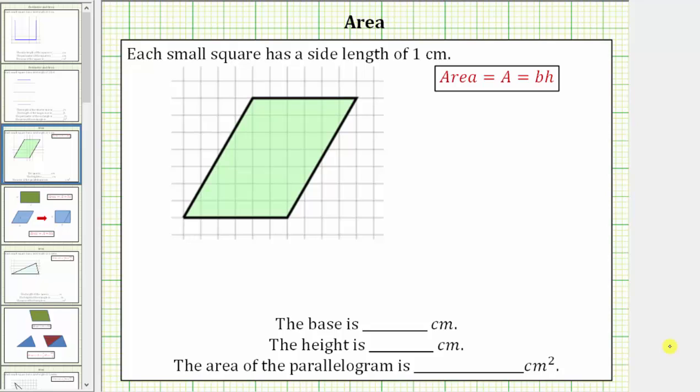We are given a parallelogram on a grid, and we're told each small square on the grid has a side length of one centimeter. We are asked to determine the length of the base, the height, and the area of the parallelogram.